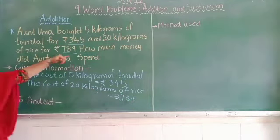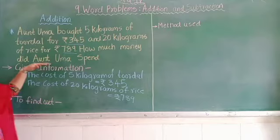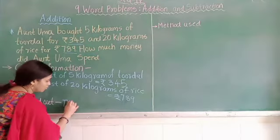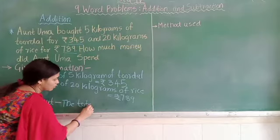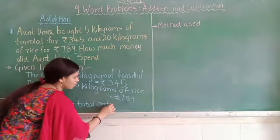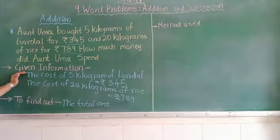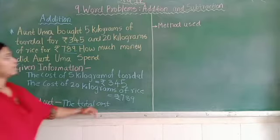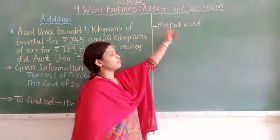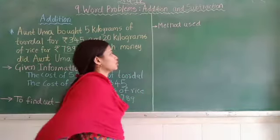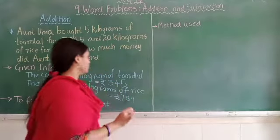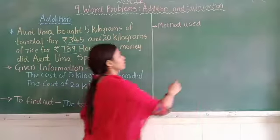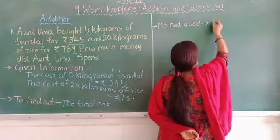What they are telling us to find out is the total cost. So here we have to write: To find — the total cost. First, we write the given information, then what they are telling us to find out, then which method we will use. Here we will use addition, because they are telling us to find the total cost. So the method used will be addition.